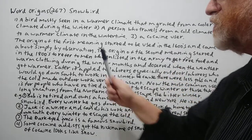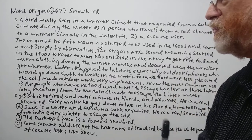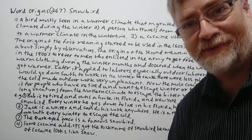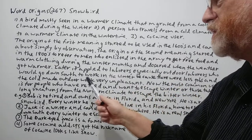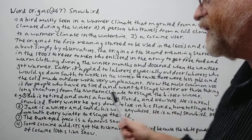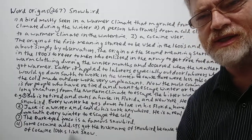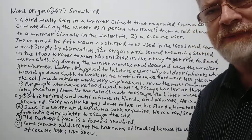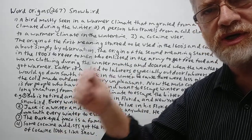The origin of the second meaning started in the 1800s to refer to men who enlisted in the army to get free food and warm clothing during the winter months, and then deserted when the weather got warmer. Later it applied to laborers, especially outdoor laborers, who would go down south to work in the winter because there were fewer jobs and the cold made outdoor work very unpleasant — in the north or northeast, snow would delay work for days anyway. It just made more sense to do jobs down in Florida or Georgia or some of the warmer states.